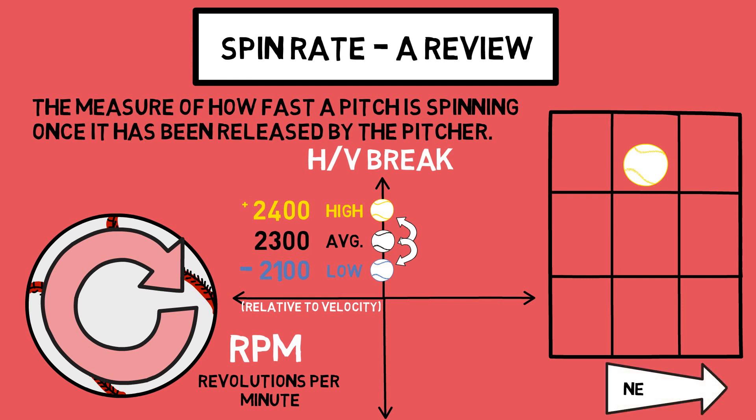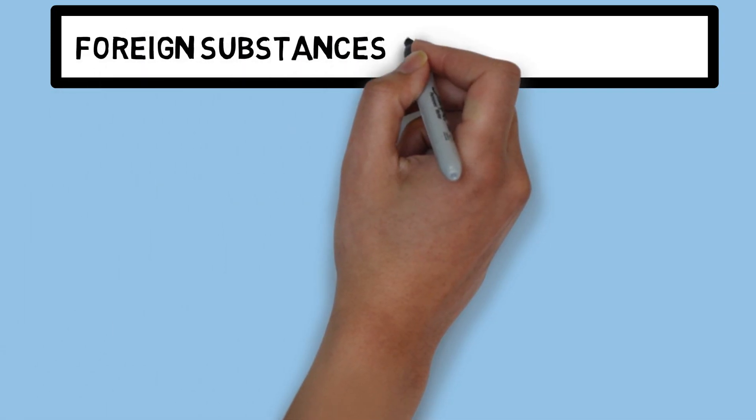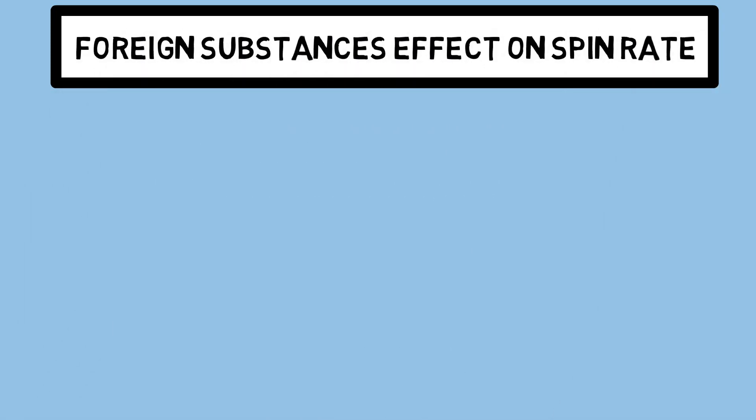Now let's move on to how foreign substances come into play here. To start off with a pretty obvious statement, foreign substances affect a pitcher's spin rate. But why does that matter?